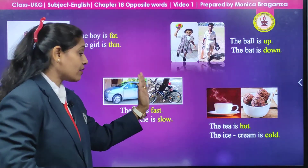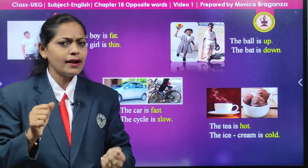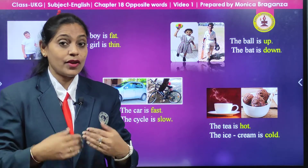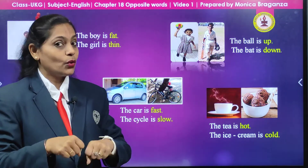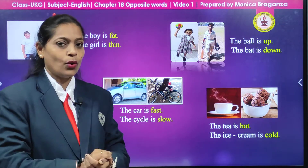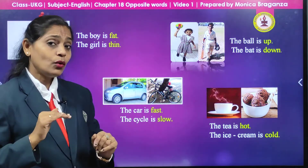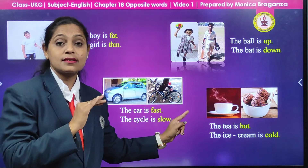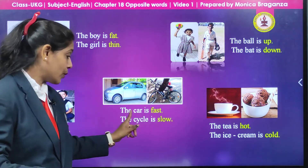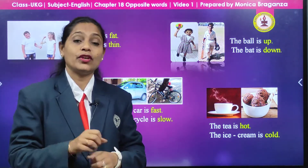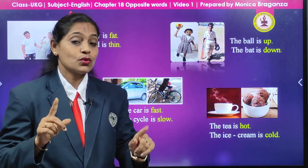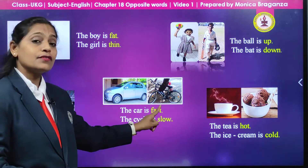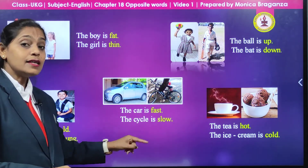Now here we are having a picture of two vehicles — a cycle and a car. If you sit in a car you will reach fast, but if you are on a cycle you cannot go at that speed and it will be a little bit slow. So which vehicle goes fast? The car! So what we are going to say: the car is fast, but the cycle is slow.